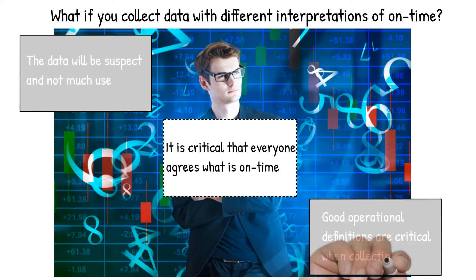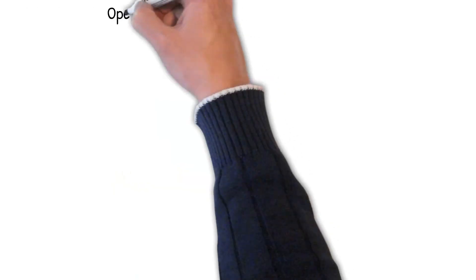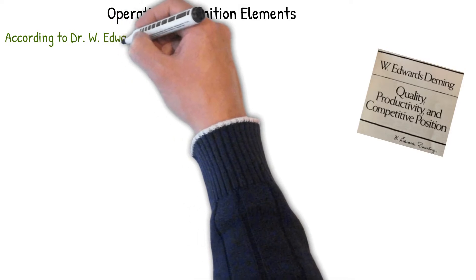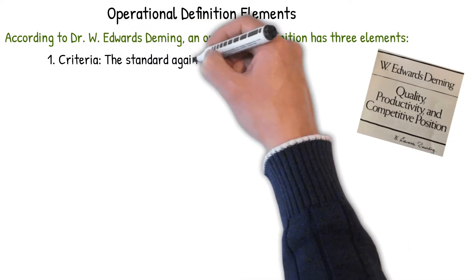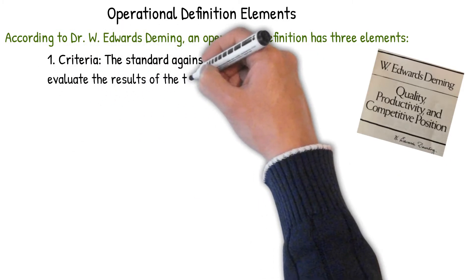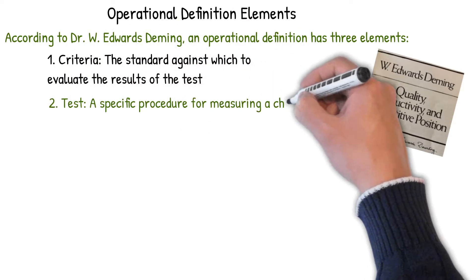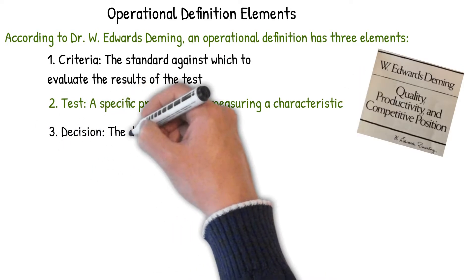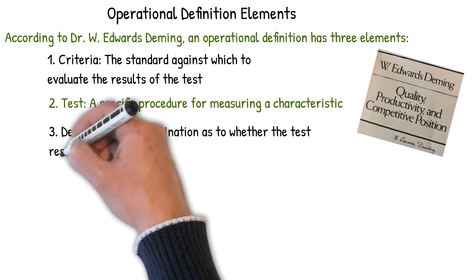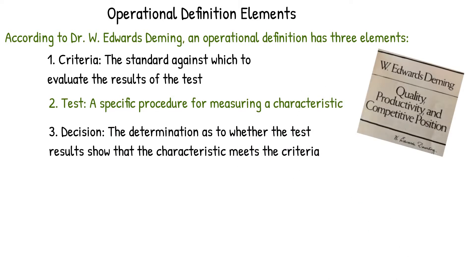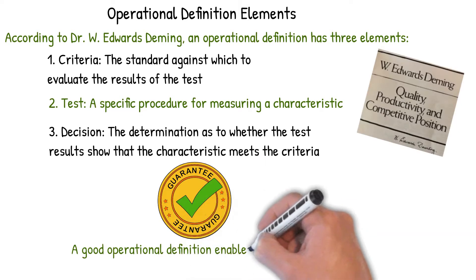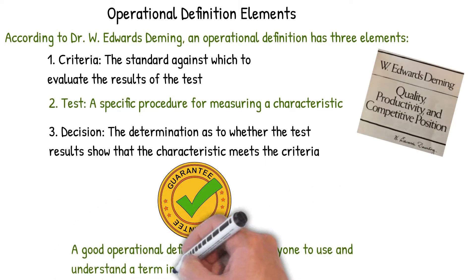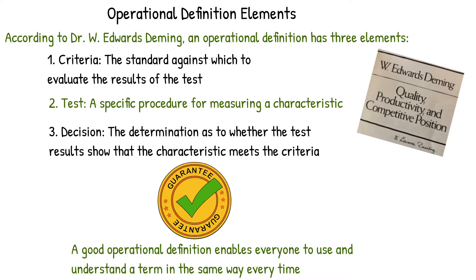So it's critical that everybody agrees on what is on-time. Good operational definitions are critical when collecting data. According to Dr. Deming, an operational definition has three elements: the criteria — the standard against which to evaluate the results of the test; the test — a specific procedure for measuring a characteristic; and the decision — determination as to whether the test results show that the characteristic meets the criteria.